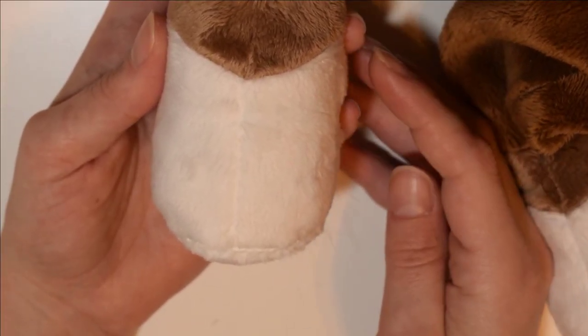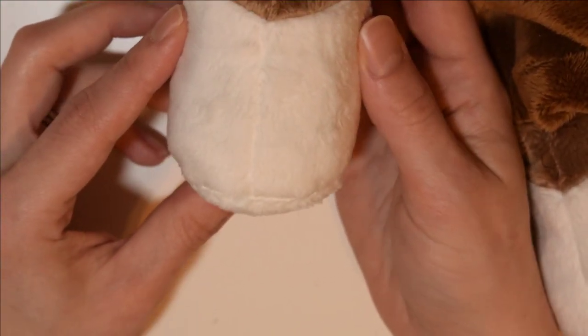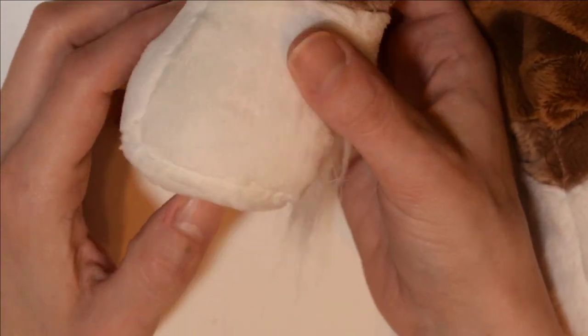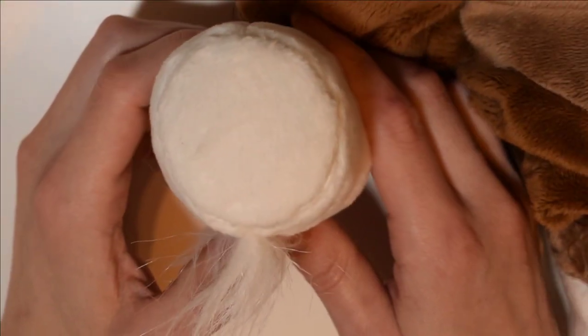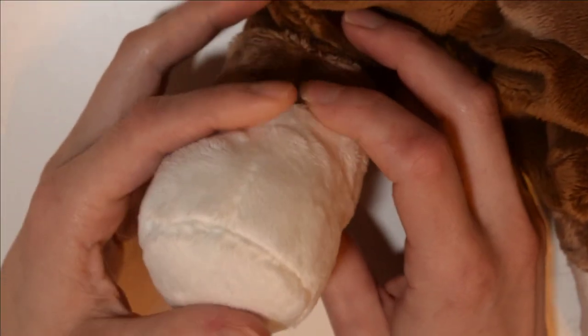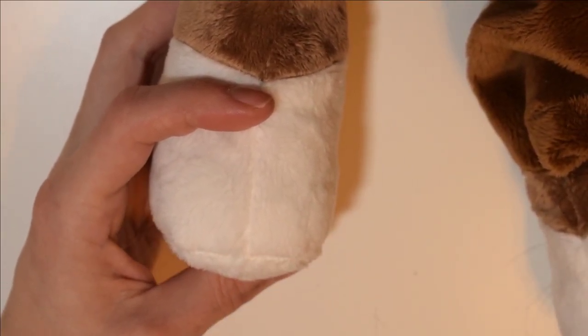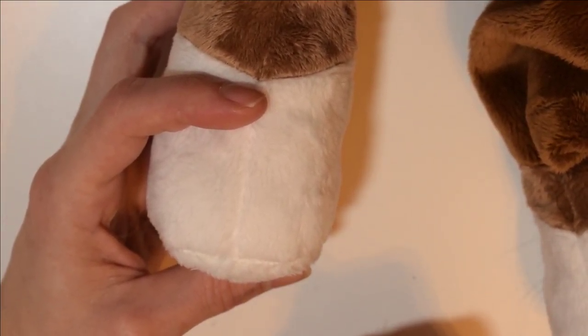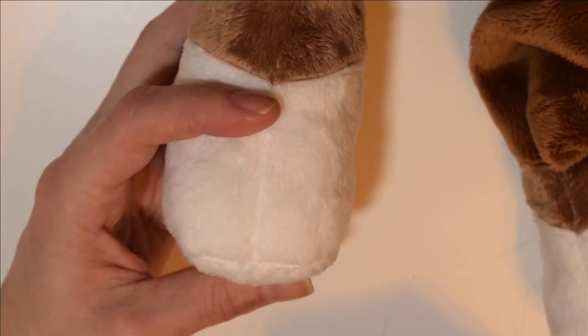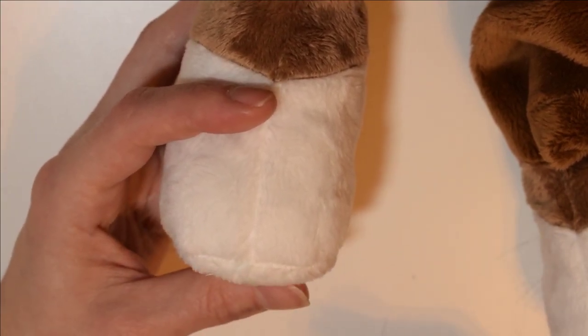So I went ahead and turned this right side out and I also stuffed it. You can see the seam looks good. It's not bunching or puckering in any areas. The bottom is nice and round. The one thing is that the seam looks a little bit messy and that's just because the minky is stuck into the seam. So similar to how faux fur can get stuck in the seam, minky can too even though the pile is considerably shorter.